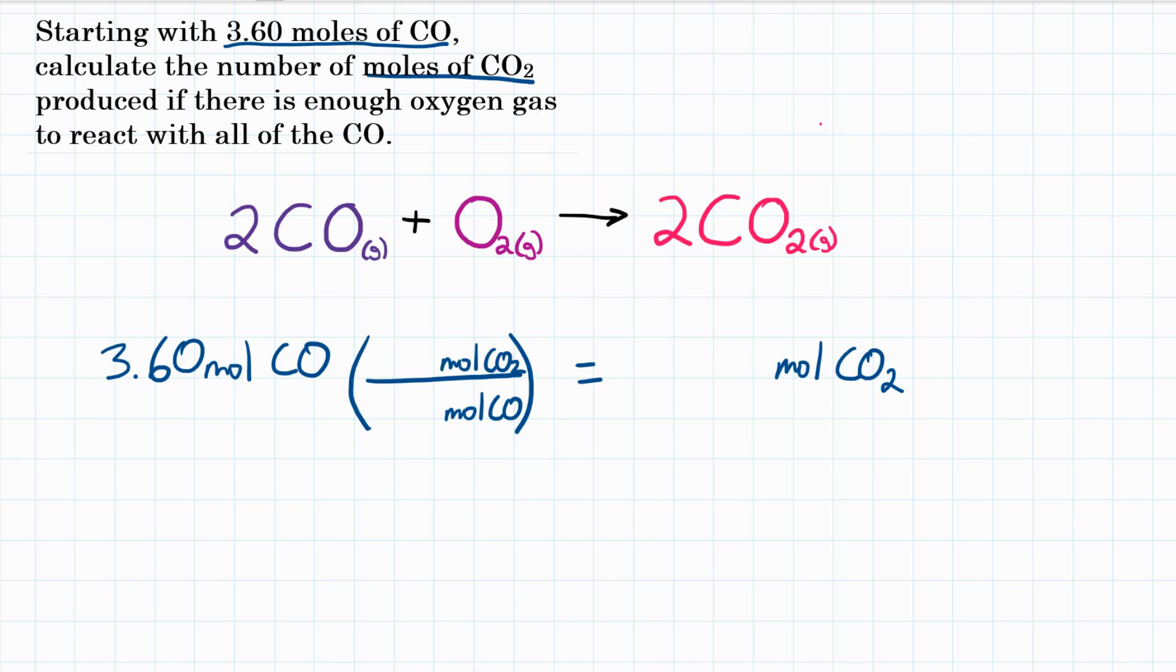We're calculating how much carbon dioxide would be produced if all 3.60 moles of carbon monoxide react. So we need to know the ratio. The ratio here is going to be our coefficients. For every 2 COs that react, we get 2 CO2s produced.